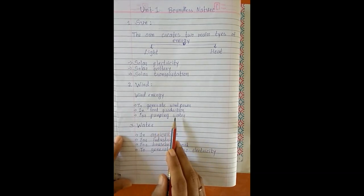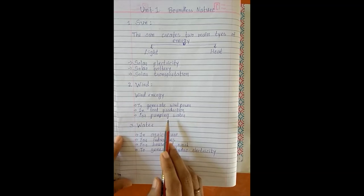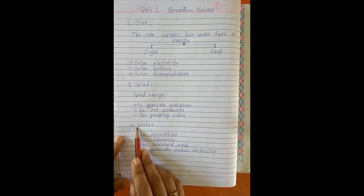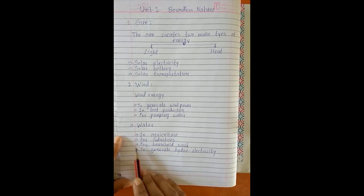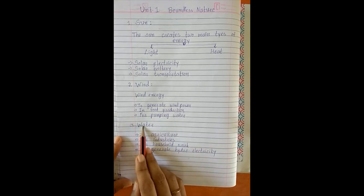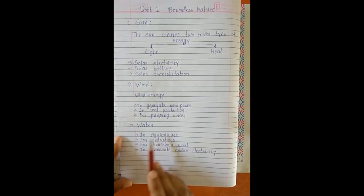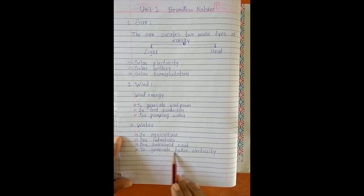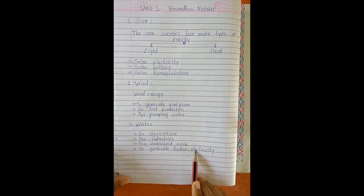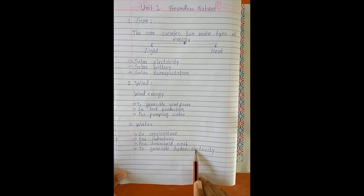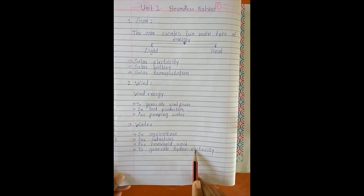Wind energy is very useful for mankind. And in the third image there is the picture of water sources. These points are related to water sources — how water is beneficial for mankind: in agriculture, for industries, for household work, and to generate hydroelectricity. These types of usefulnesses you can communicate with your partner.